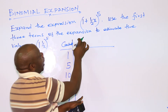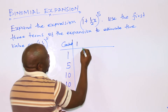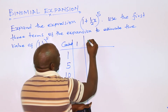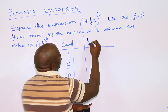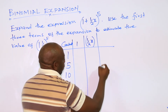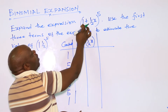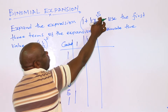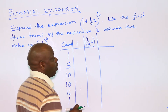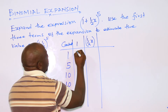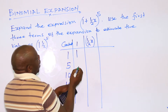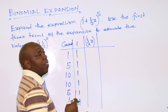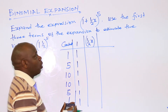In the second column, you have the first term, which is 1. This term starts from the highest power, which is 5, going down to power 0. Since 1 to any power is 1, everything in that column will be 1 — it will not have any change.